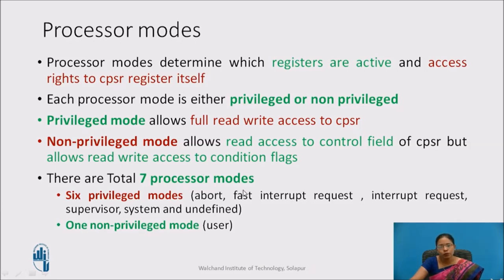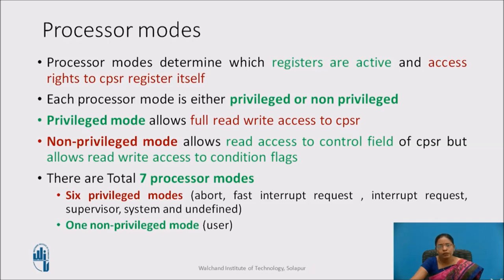There are 7 processor modes. Out of those, 6 are privileged modes and one is non-privileged. The privileged modes are: abort, fast interrupt request, interrupt request, supervisor, system, and undefined. Whereas the one non-privileged mode is the user mode.